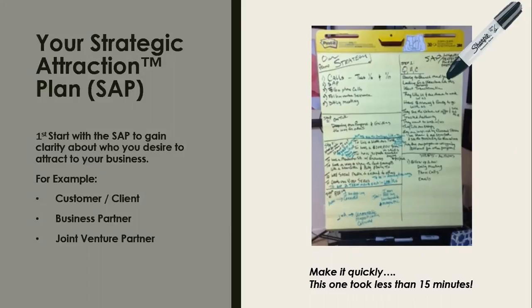When you do strategic planning, the first thing I want you to start with is your strategic attraction plan — to gain clarity about who you want to attract to your business this year. This is about attracting relationships with customers, clients, a business partner, or joint venture partners. Getting clear about who you desire to work with is your first step.